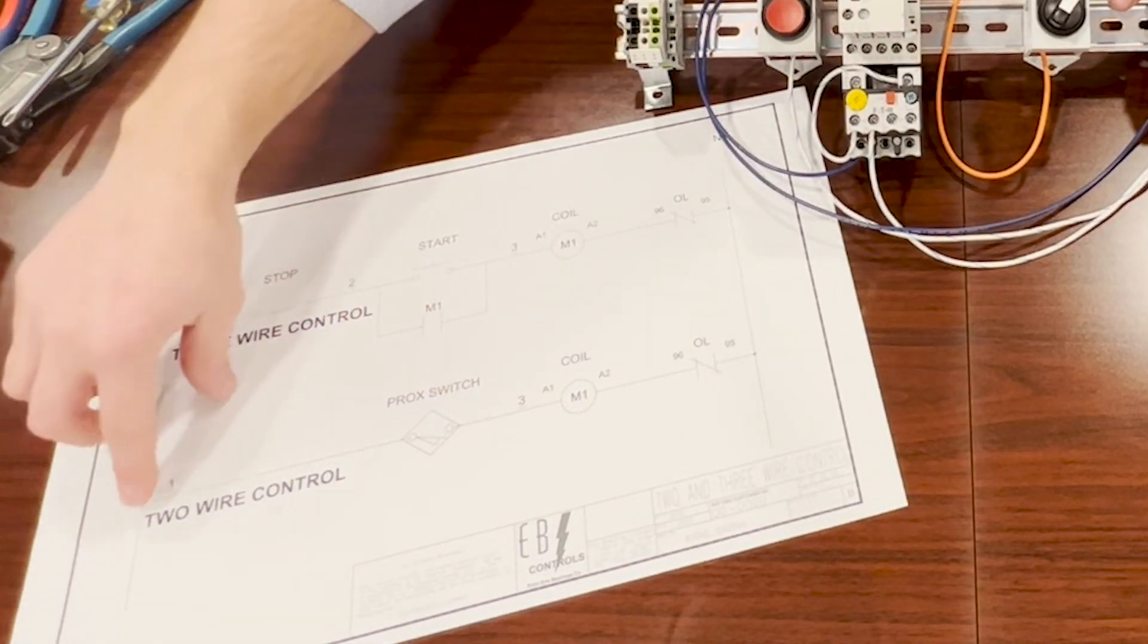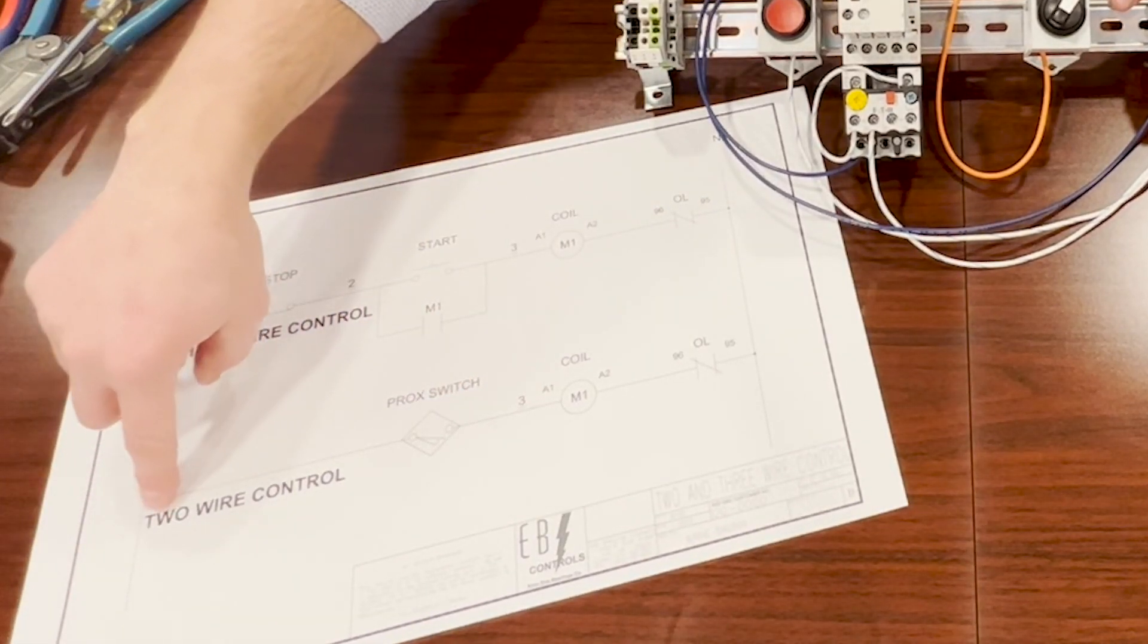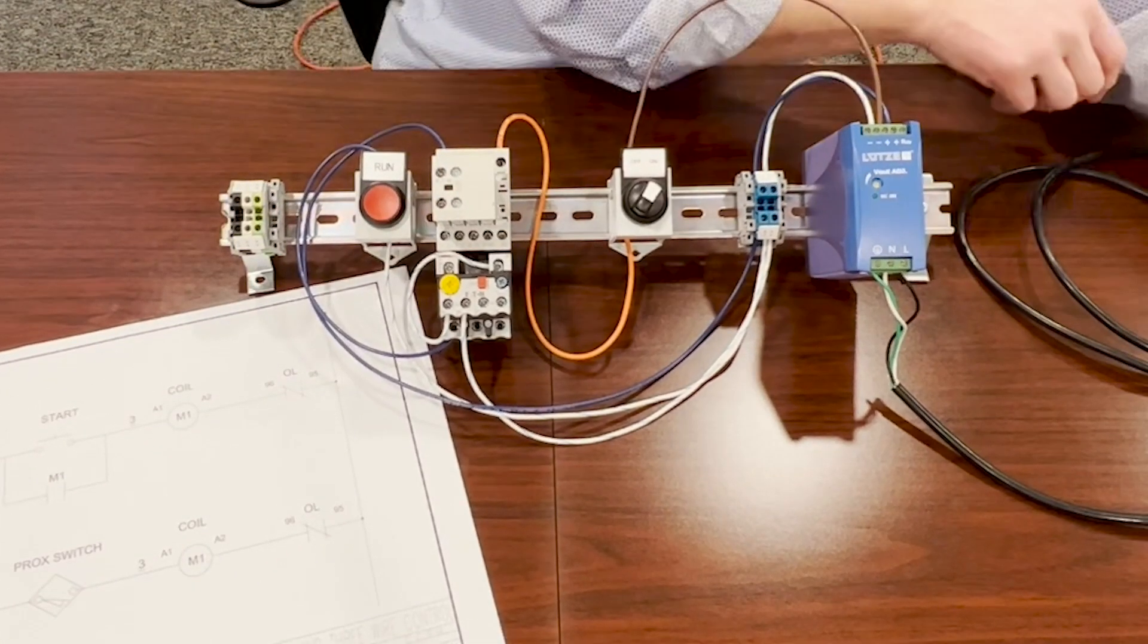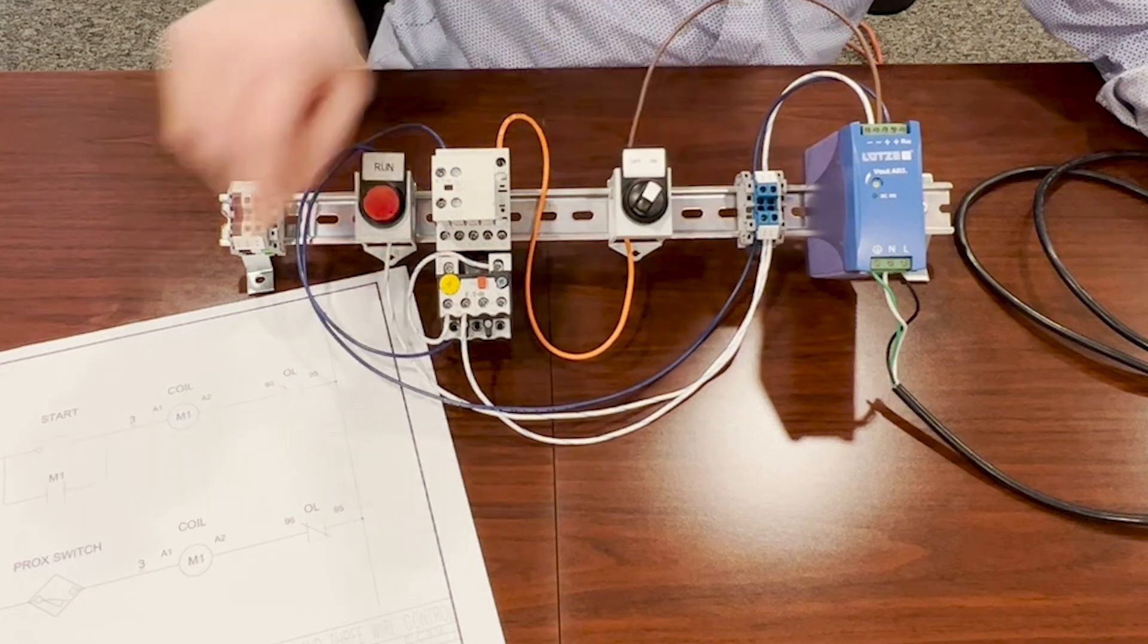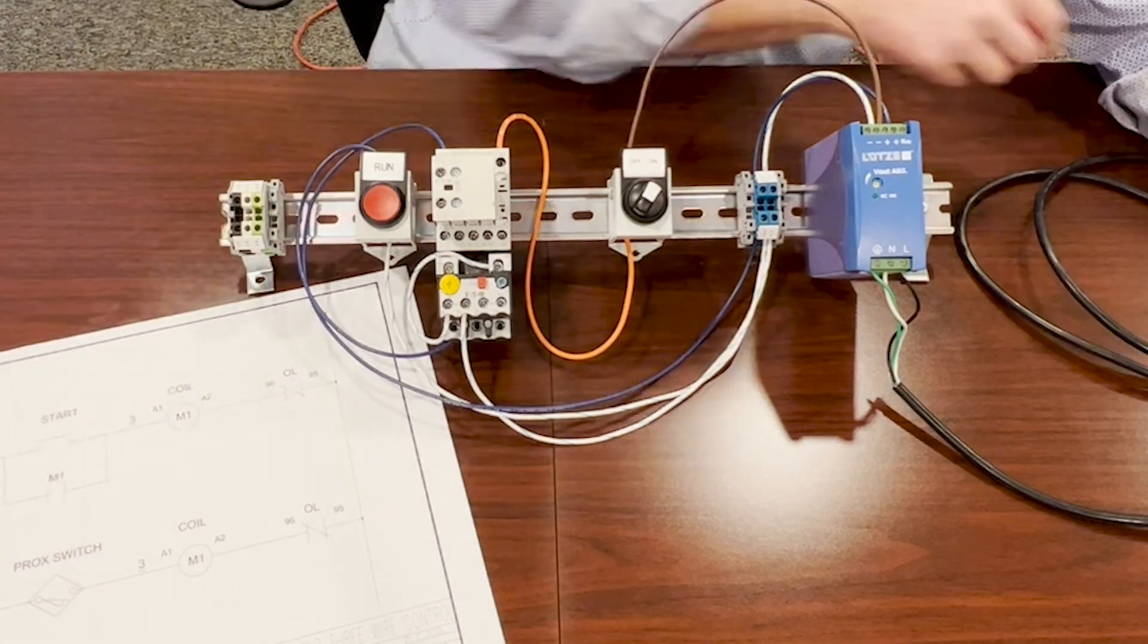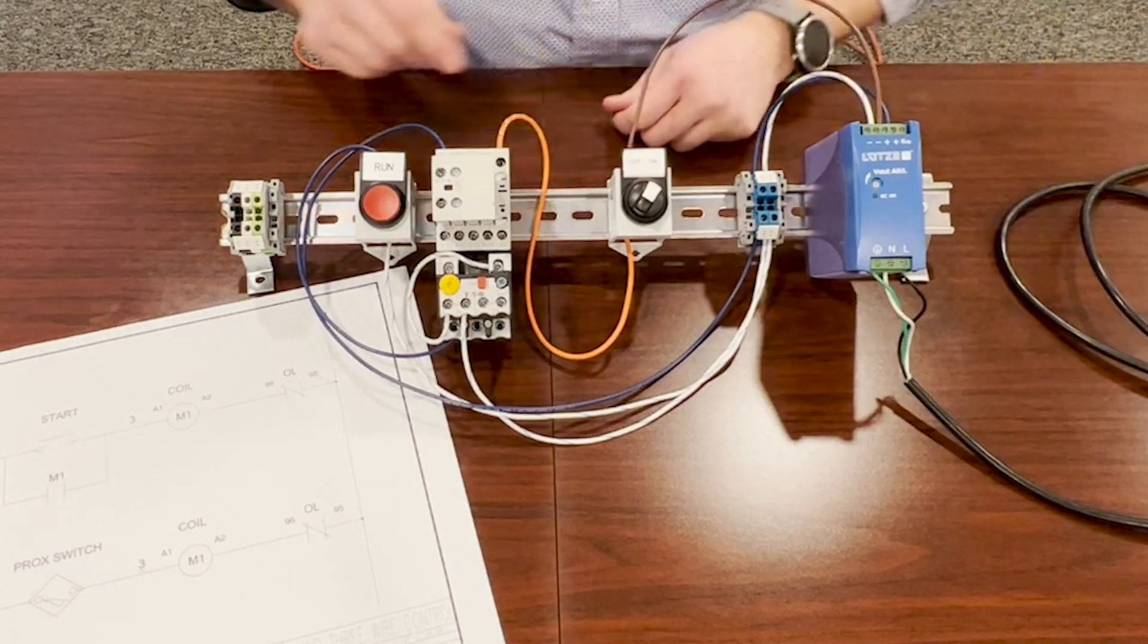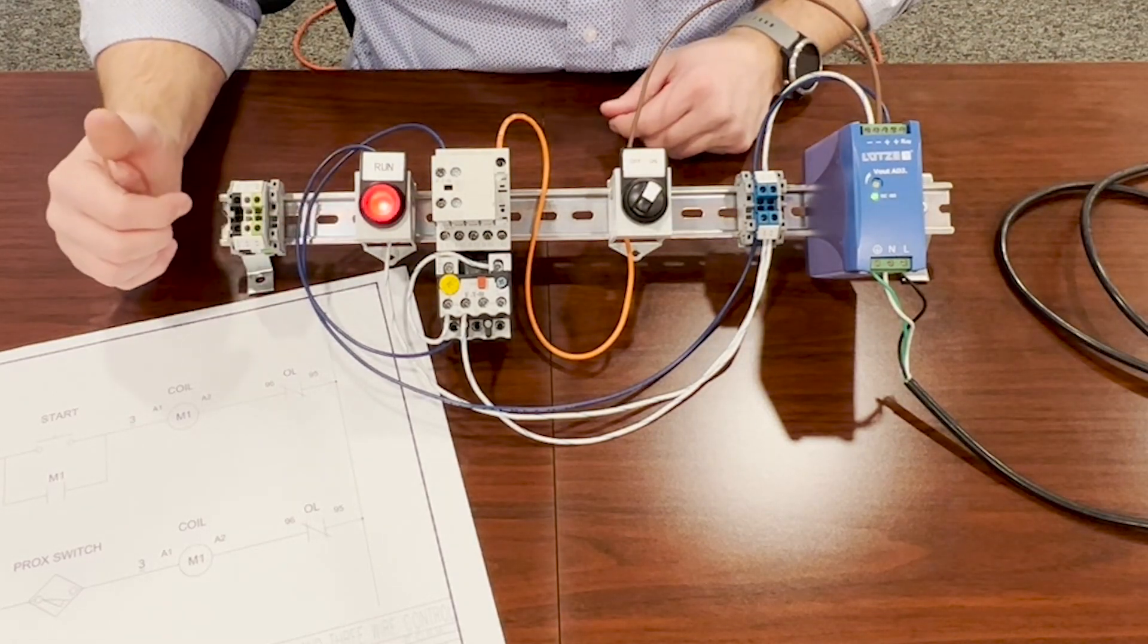On the drawing, that would be like if we're removing power here, so the power is no longer going to the switch. If we're still in on position or if this proxy switch was still made, when we re-energize or power comes back on, you'll see it automatically turns back on.